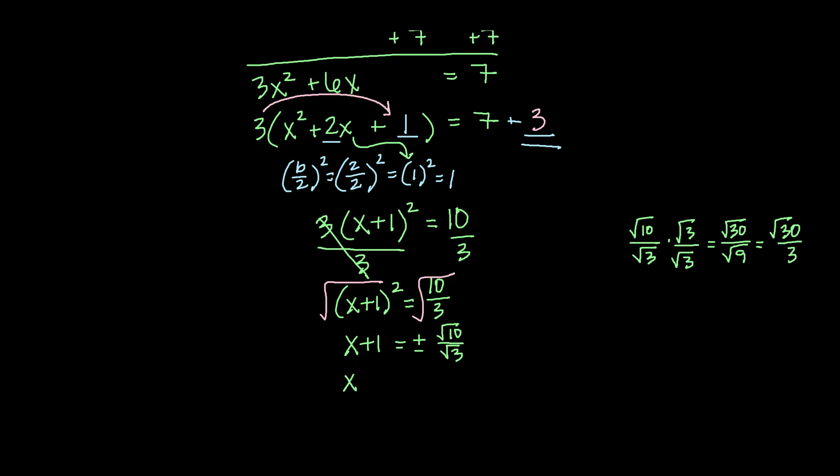I'm going to go ahead and rewrite: x plus 1 equals plus or minus square root of 30 over 3. And then subtracting 1 from both sides, we get our final solution of x equals negative 1 plus or minus the square root of 30 over 3.